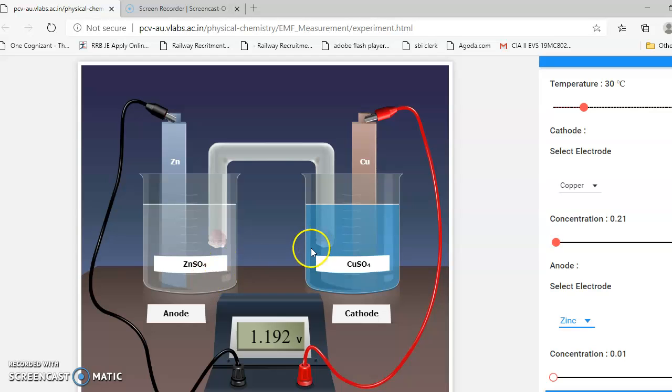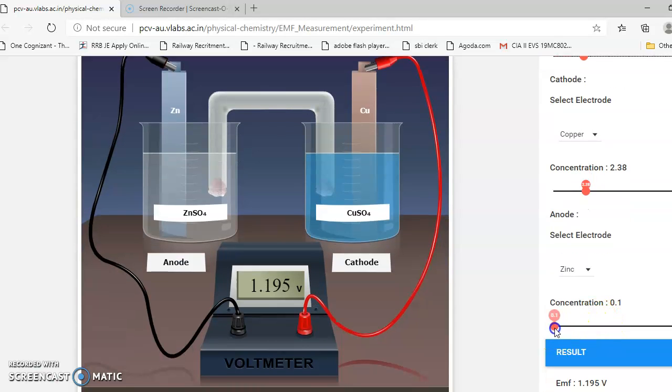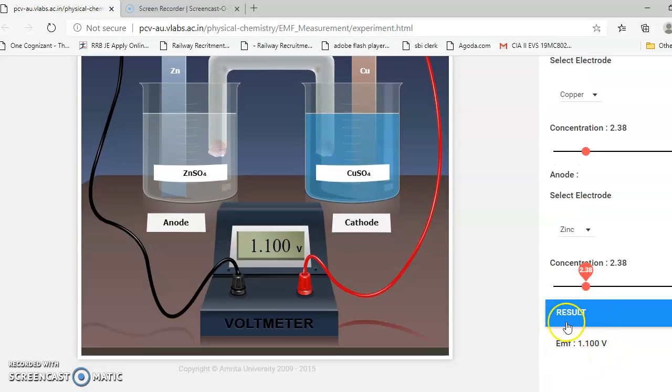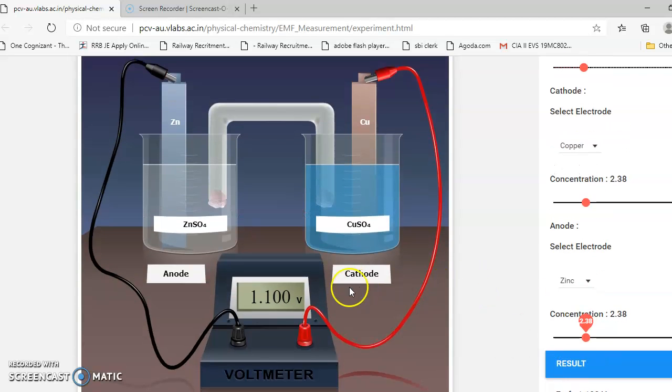For example, I'm going to vary the concentration. I'm moving this to 2.38 concentration, and this also to 2.38. Now you see the EMF varies—it is 1.1 volts. The EMF will be shown here; the result is shown here. This confirms that as the concentration of the electrolyte varies, EMF also will vary.